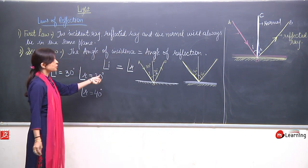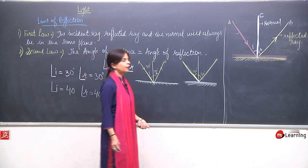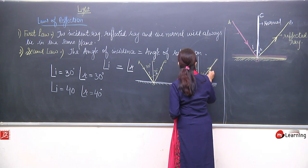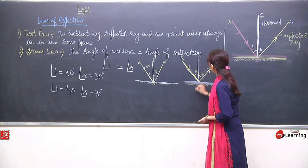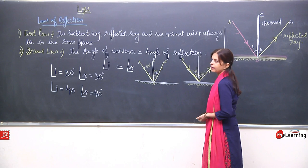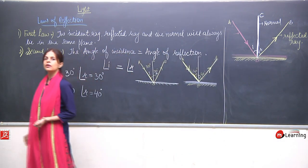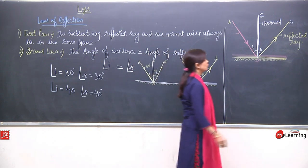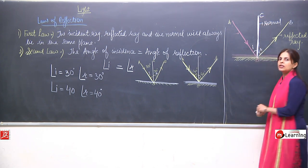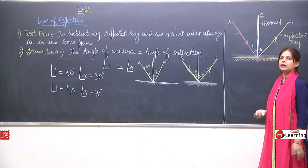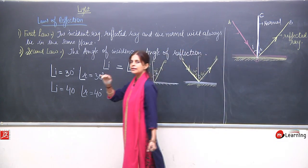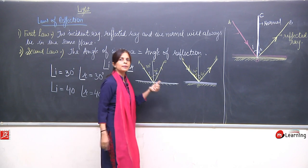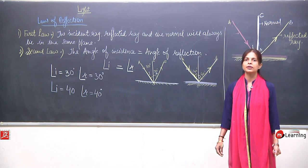This is the incident ray, this is the reflected ray, this is the normal, this is the point of incidence, this is angle I, and this is angle R. Angle I is always equal to angle R. So there are two laws: the first law says the incident ray, reflected ray, and normal always lie in the same plane; the second law says angle I always equals angle R.